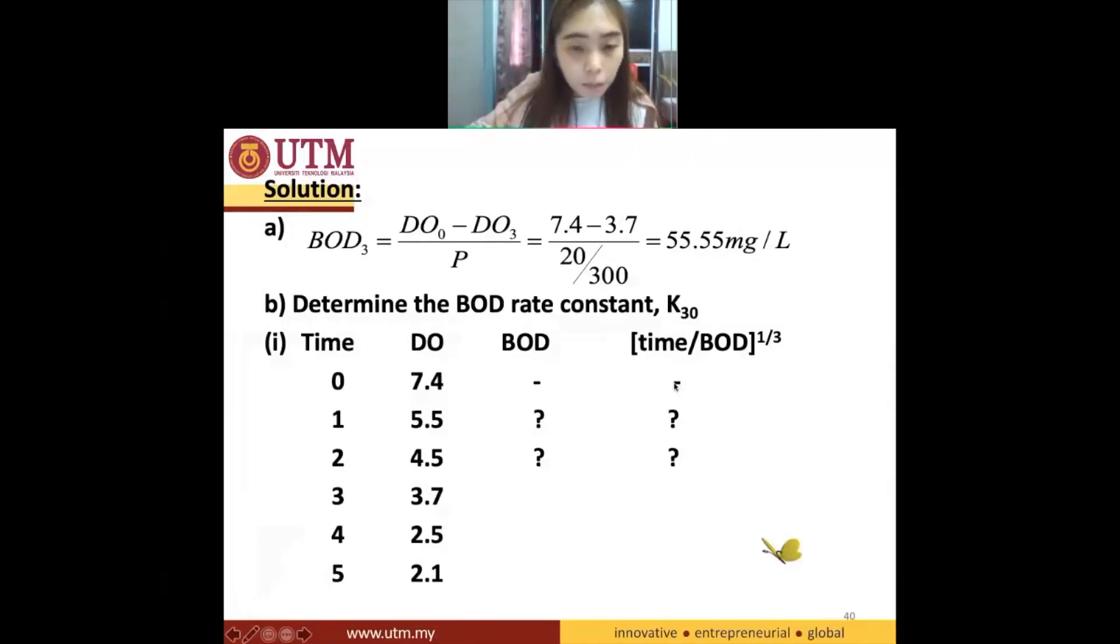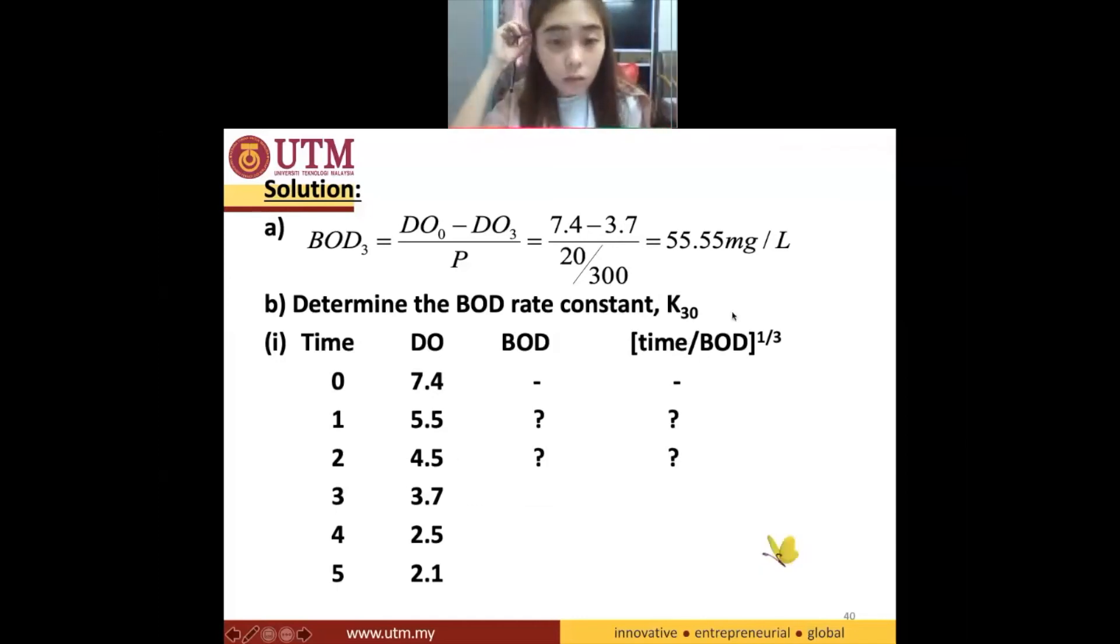So let's try to do these two parts first. I would like you guys to find out your BOD1, BOD2, and then find out the value for time divided by BOD to the power of one-third. Just for this only. I'd like to, Jian, who want to share your answer for BOD1? BOD1 is 28.5. That's right. What about time divided by BOD, Syam? 0.33. 0.33, correct.